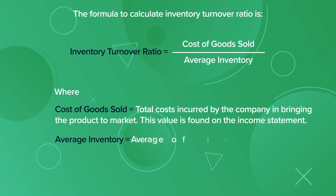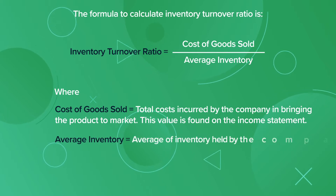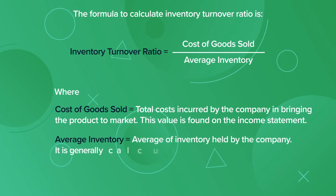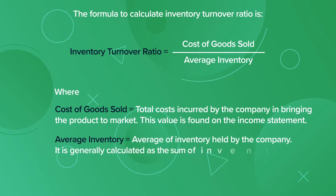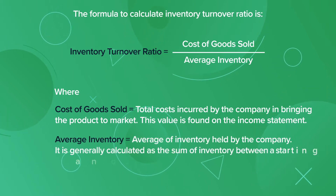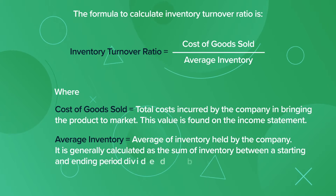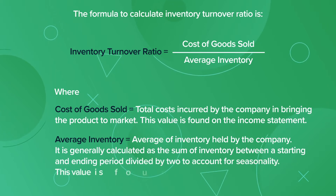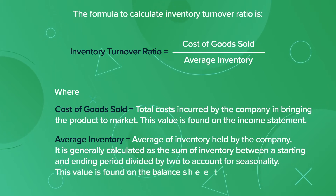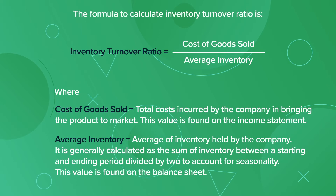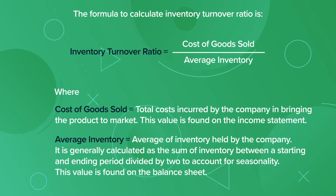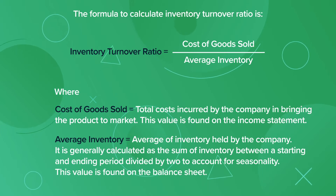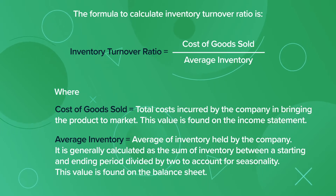Average inventory equals the average of inventory held by the company. It is generally calculated as the sum of inventory between a starting and ending period, divided by 2 to account for seasonality. This value is found on the balance sheet.